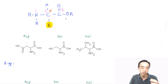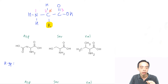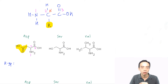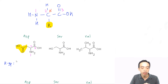For ASP, my amine is at position 1, the carbon is at position 2, and position 3 is my acid group. So this is position 1, 2, and 3: amine, carbon with R group, and acid group. The R group in this case is this group here, which I can write down as CH2-COOH.